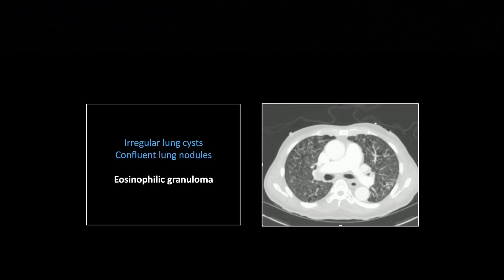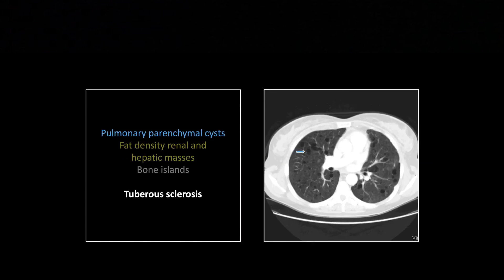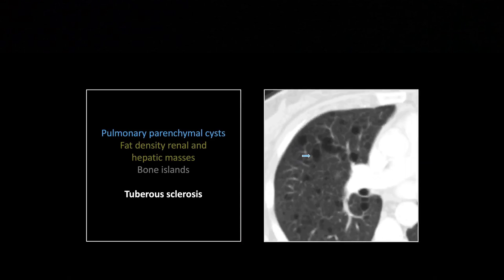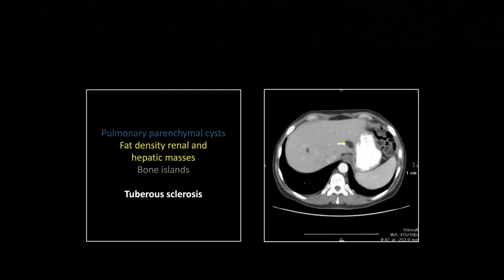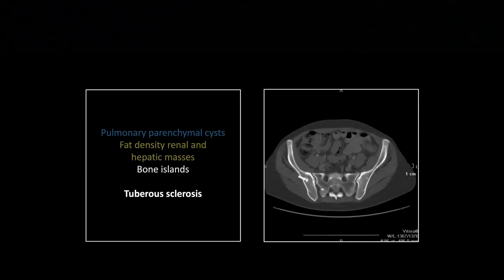So that's pulmonary EG. Another cystic lung disease — this one is a case of tuberous sclerosis. The cysts here are a little bit larger, also with no discernible wall, and this is lymphangiomyomatosis. You can see this patient has fat density liver lesions, an unbelievable number of fat density renal lesions, and small bone islands — multiple bone islands, including one in the sacrum — which are also a tip-off for tuberous sclerosis. So this patient pretty much has it all.